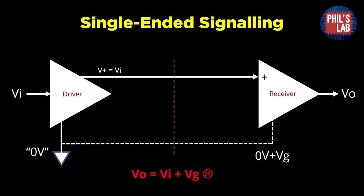Oftentimes between interconnects, for example from a microcontroller to a sensor, we might use single-ended signalling — this could be I2C, SPI, or even just a simple GPIO. In essence, we have an input voltage we'd like to send along a trace using a driver, with one trace and a suitable return path going to the receiver side. The problem is, if we travel longer distances, have common mode noise, crosstalk, or ground offsets — as ground is not just a single voltage — the output for single-ended signalling gets our signal plus this ground offset, which can be quite harmful.